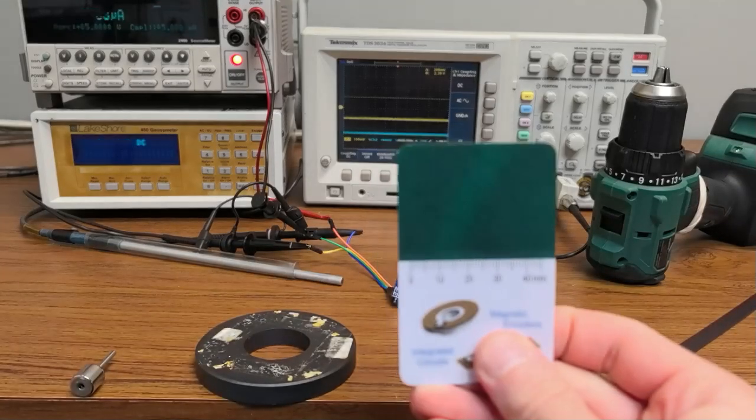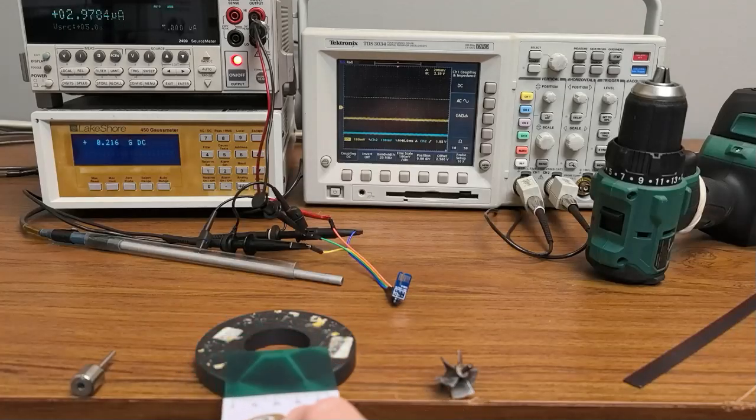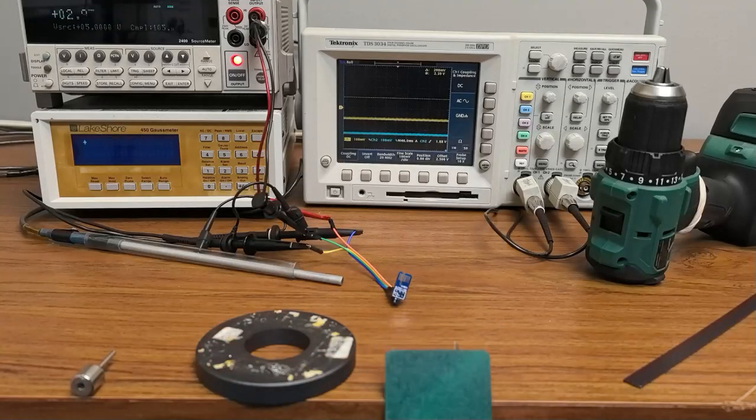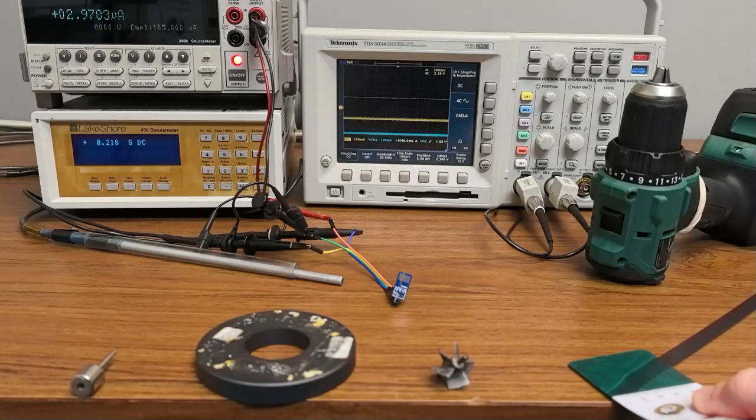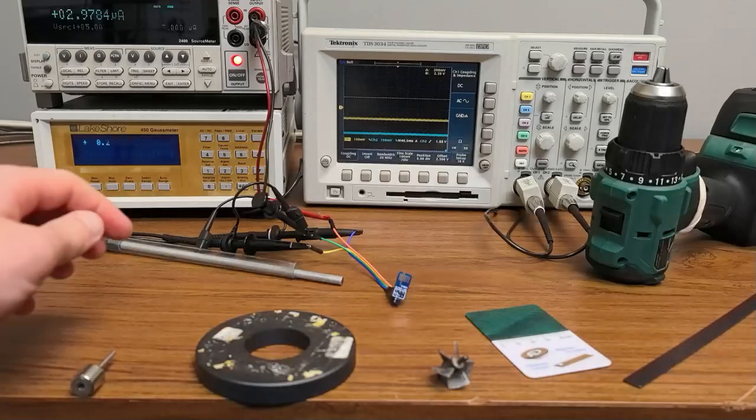We'll show how the sensor can detect two-pole magnets, multi-pole magnets, ferromagnetic turbines, linear magnetic scale, and even rotations in the Earth's magnetic field.